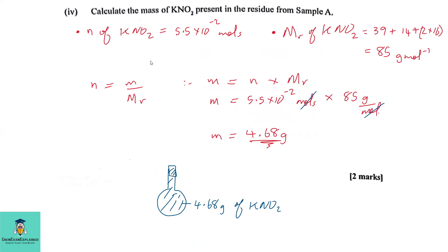Question 1f part 4: Calculate the mass of potassium nitrite in the residue. Moles of KNO2 = 5.5 × 10⁻² mol. Molar mass of KNO2 = 39 + 14 + (2 × 16) = 85 g/mol. Mass = moles × molar mass = 5.5 × 10⁻² × 85 = 4.68 g of potassium nitrite present in the volumetric flask.